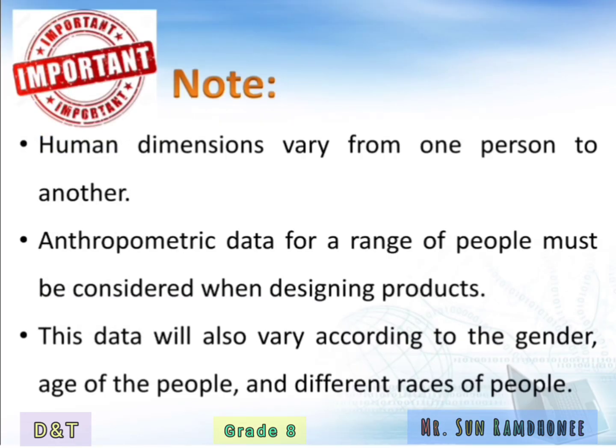You have to note that human dimensions vary from one person to another. The anthropometric data for a range of people must be considered when designing products, and this data will also vary according to gender, age, and different races of people. For example, Asians tend to be shorter and Europeans tend to be taller and broader.